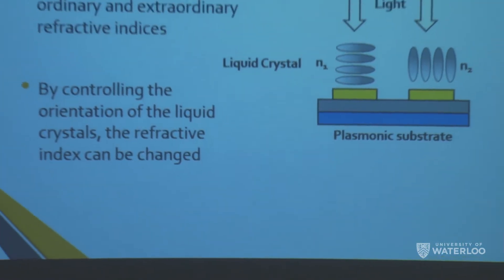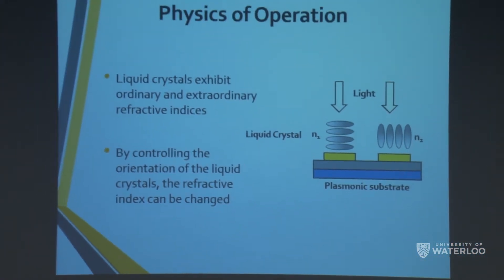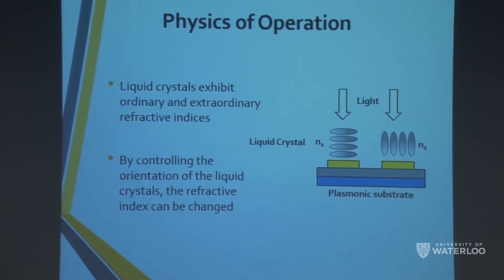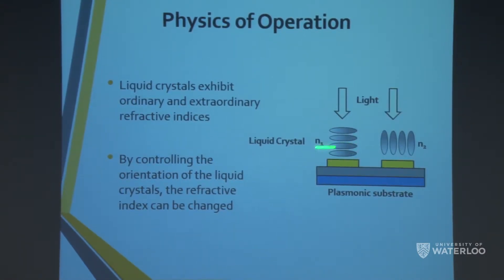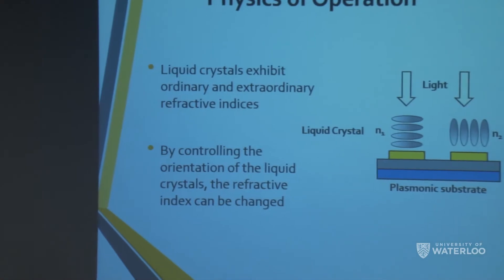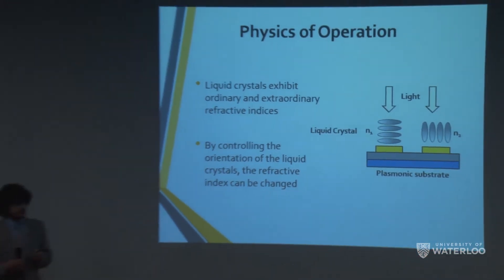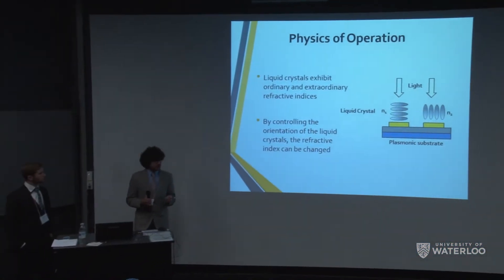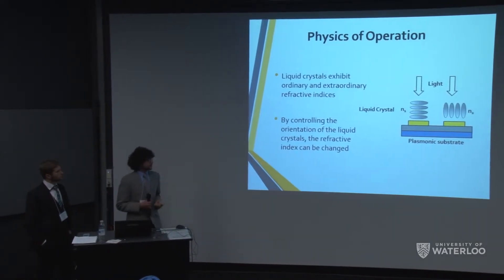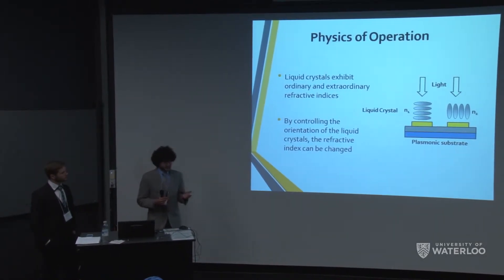By changing the orientation of liquid crystals — because they possess ordinary and extraordinary refractive indices — we can achieve different refractive indices. For example, when these elongated molecules are perpendicular to the incident plane we get a certain refractive index, and when they're parallel we get a different one. This is the method by which we can change the color.